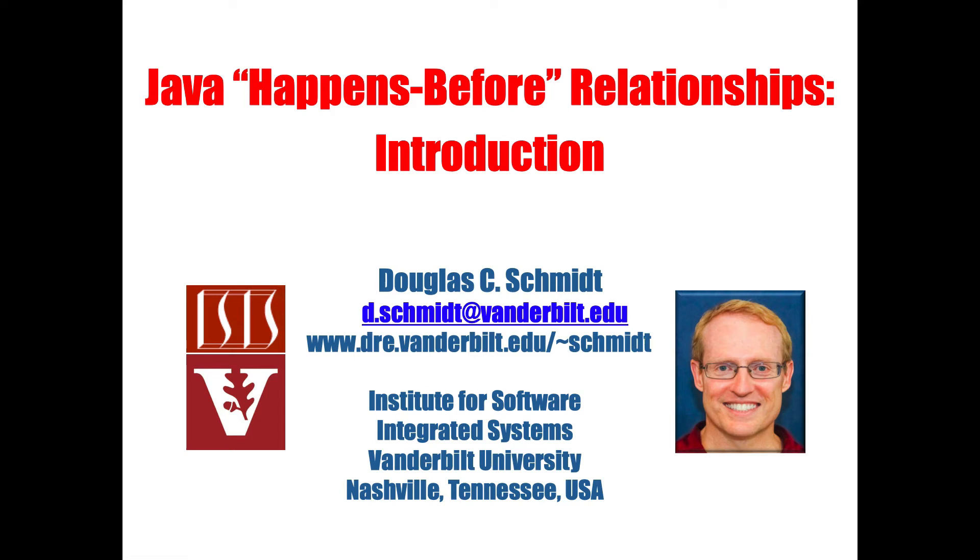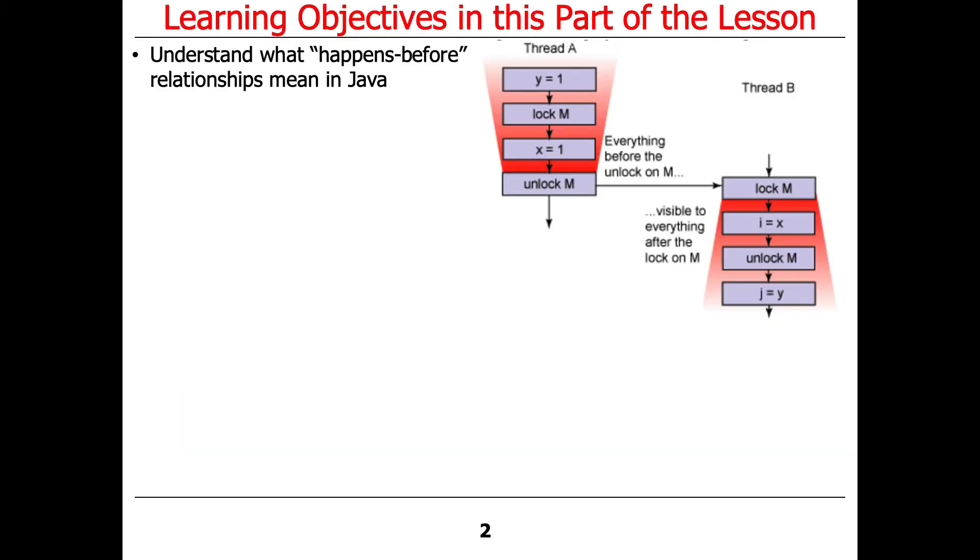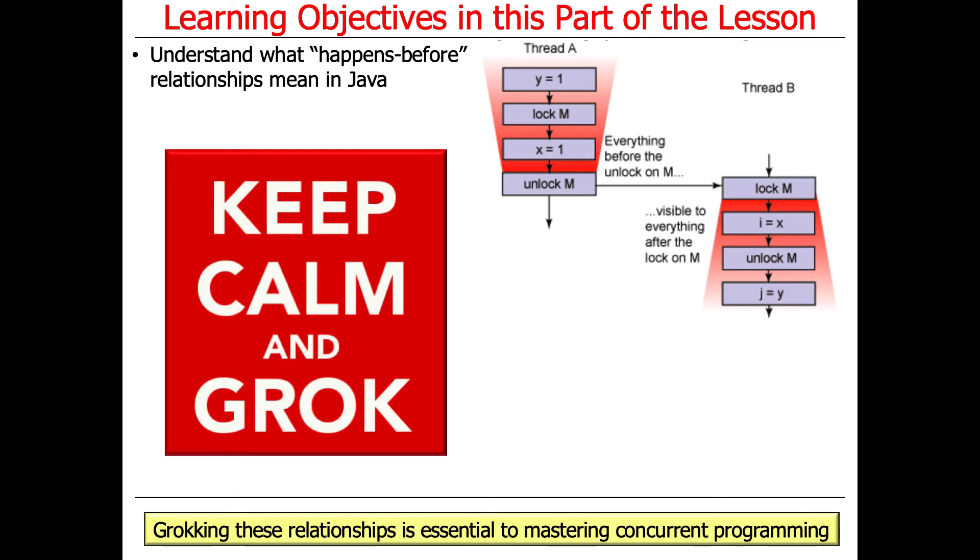We have talked a couple of times rather obliquely and vaguely about what happens-before relationships are. Now we're actually going to zero in on what they mean and why they're relevant for Java concurrent programs. We'll talk about what happens-before relationships mean in general, and we'll focus on what happens-before relationships mean in Java, because they have a very specific semantic in the context of Java concurrency and Java's memory model.